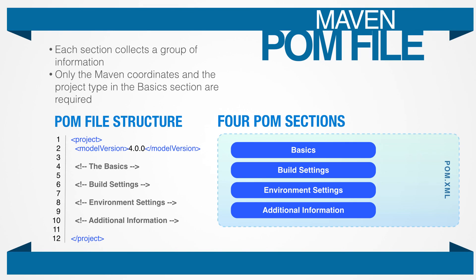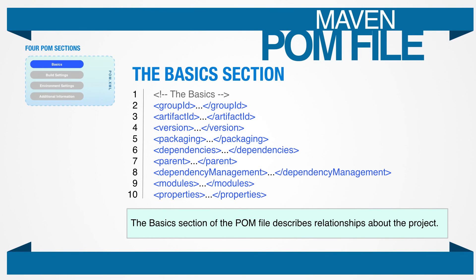The rest of the POM file consists of four main sections: the basic section, the build settings, environment settings, and additional project information. The basic section describes relationships about the project. It contains the Maven coordinates for the project, what kind of artifact it should build, any dependencies the project has on other Java libraries, and the properties a POM file needs to complete the build.